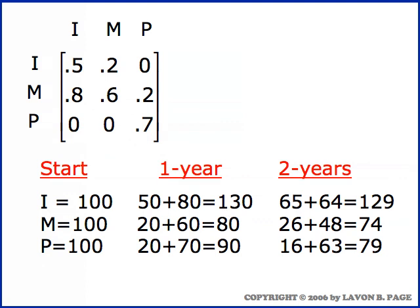Now what do we have in the mature population at the end of the year? Twenty percent of the immatures age into the mature category — that's twenty percent of the hundred, which is twenty — and sixty percent of the ones that are already mature remain in that category, that's sixty. Twenty plus sixty is eighty matures at the end of the year.